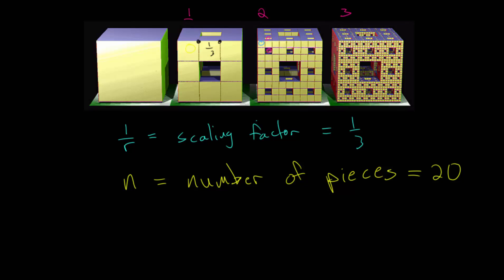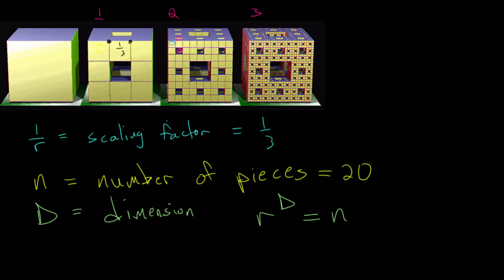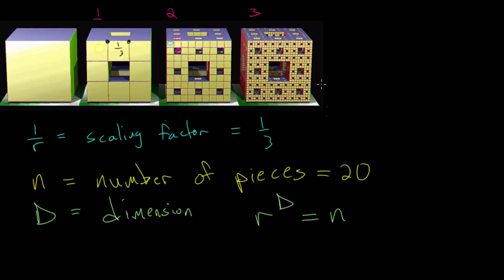Then we have the variable d, which is the dimension, and this is what we're trying to solve for. So the equation relating these three ideas is that r, when raised to the d power, that dimension, is equal to the number of pieces. Like I mentioned, we derived this in an earlier video, which I highly recommend watching if you want to see where this equation comes from.